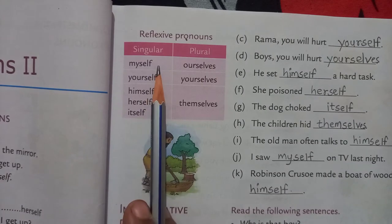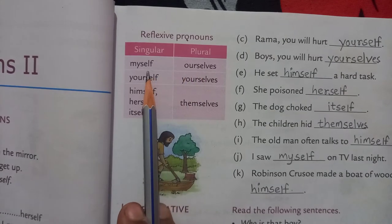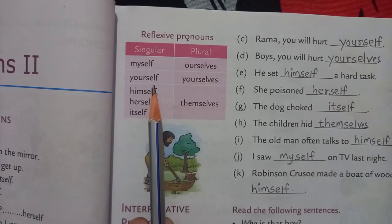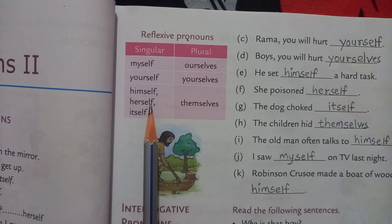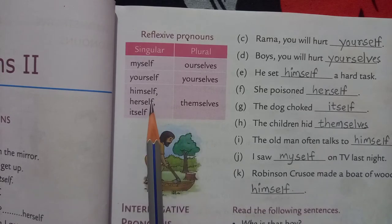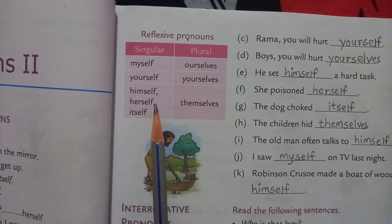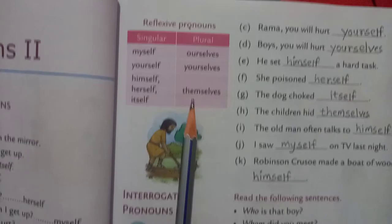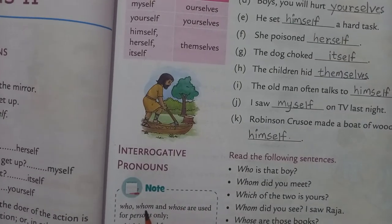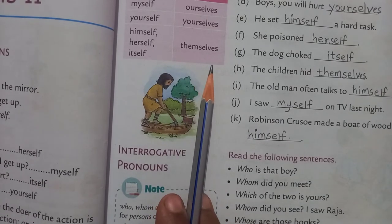Reflexive pronouns — singular and plural. Myself (singular), ourselves (plural). Yourself, yourselves. Himself, herself, itself are singular, and the plural of these three is themselves. So when we use 'self' or 'selves', it is a reflexive pronoun.